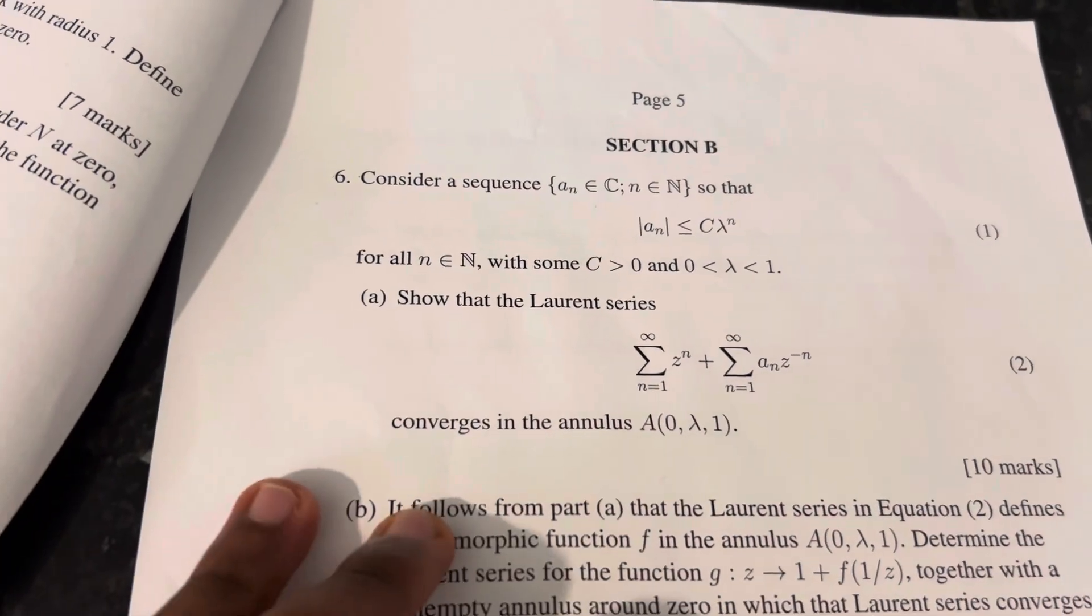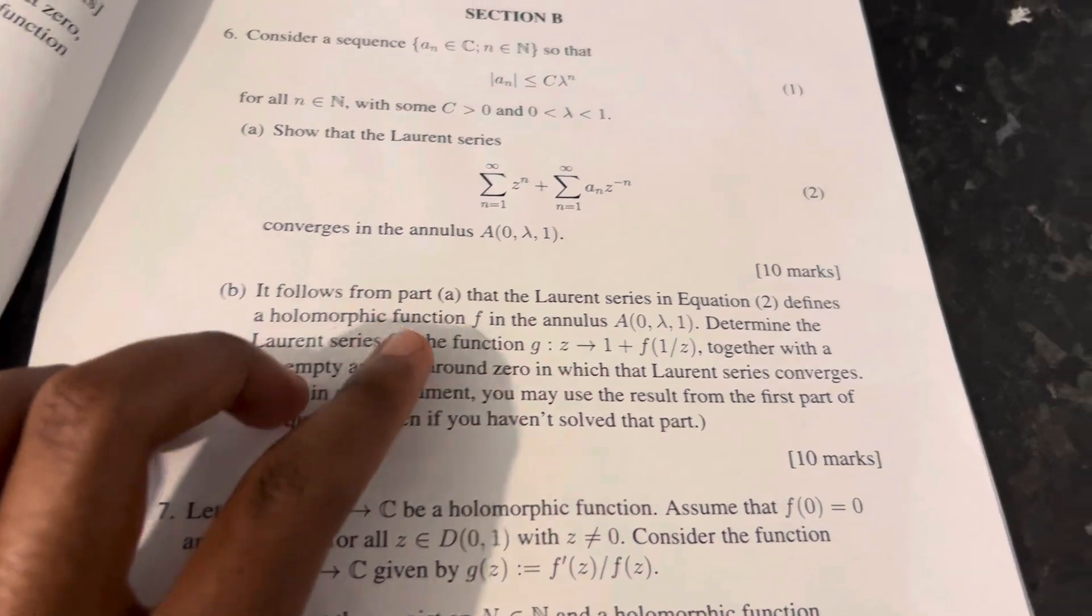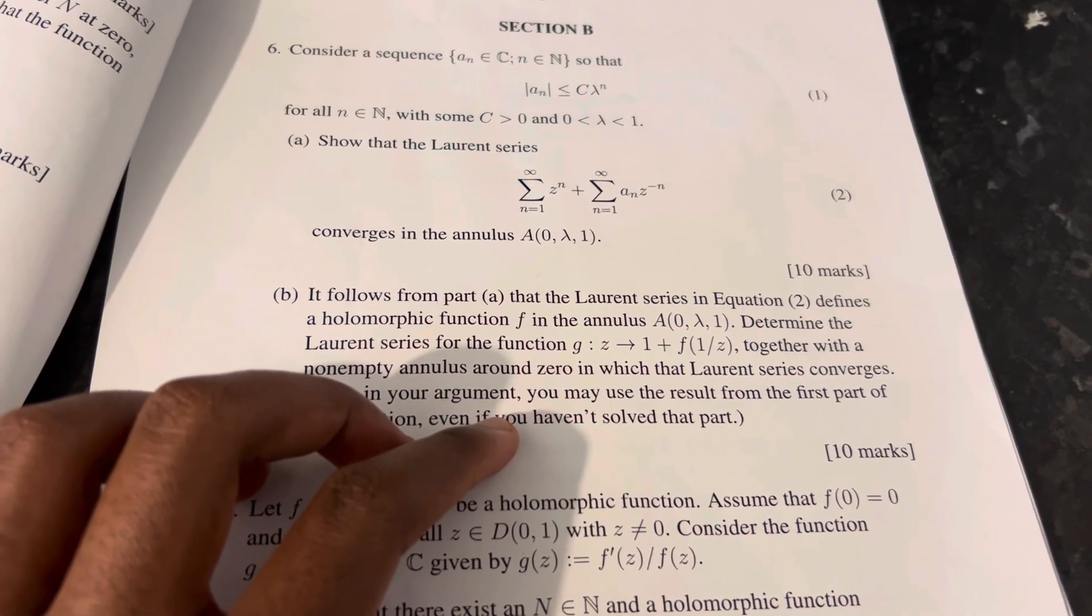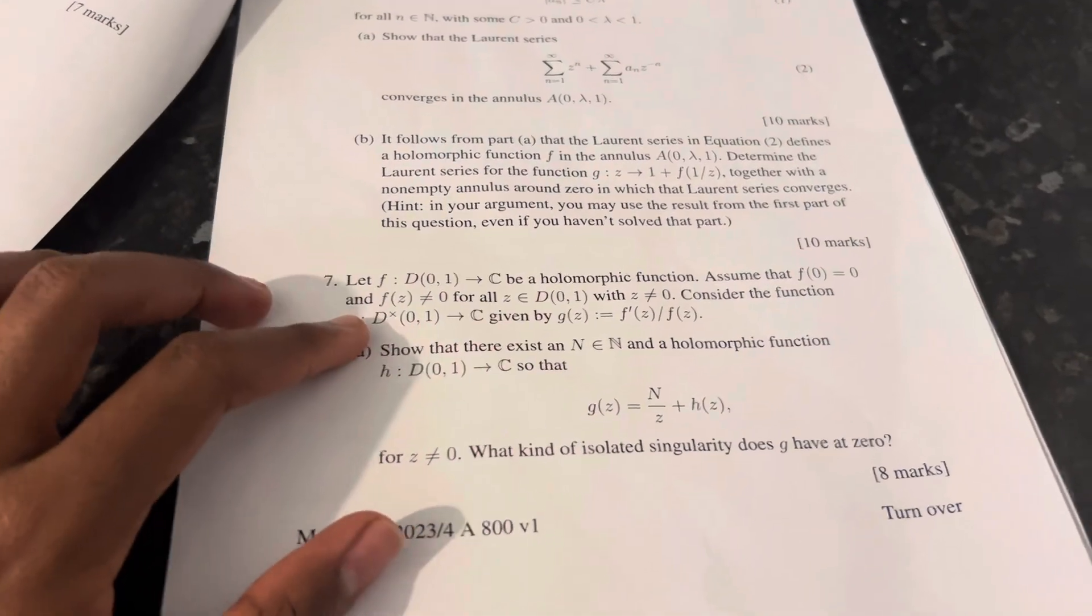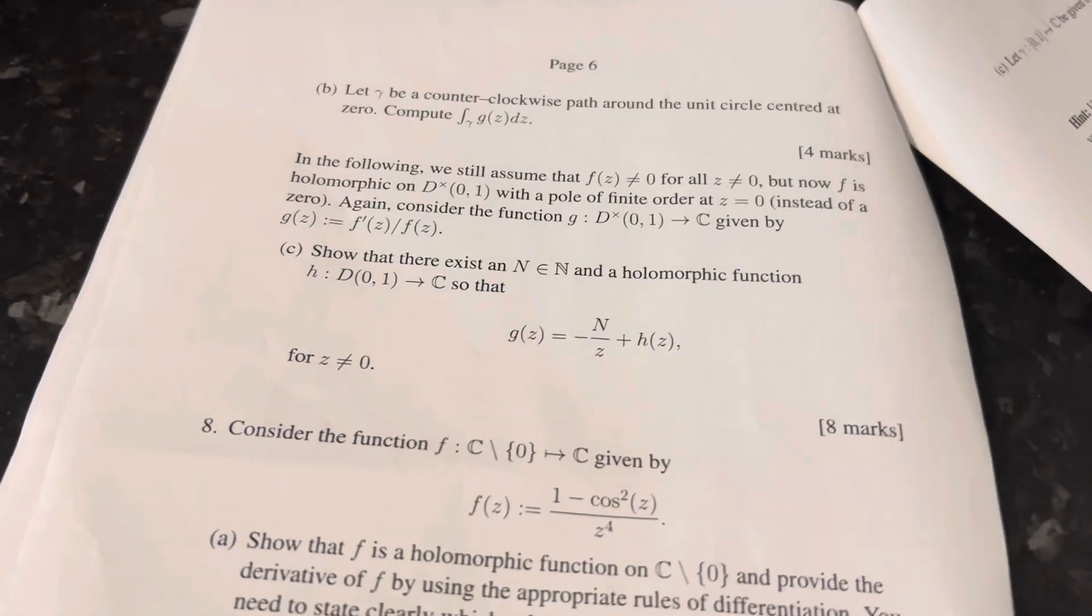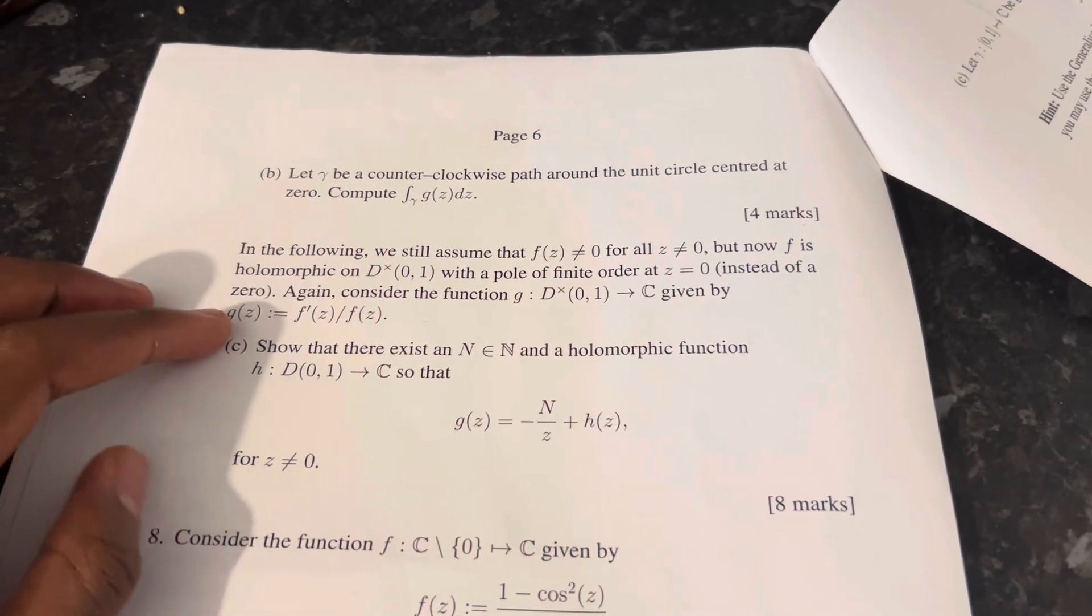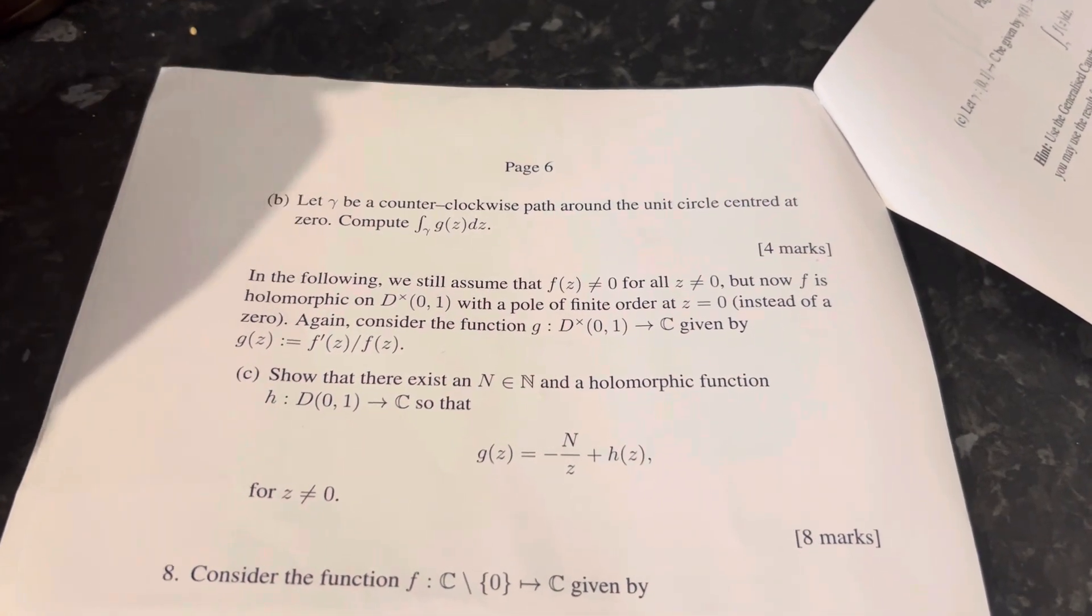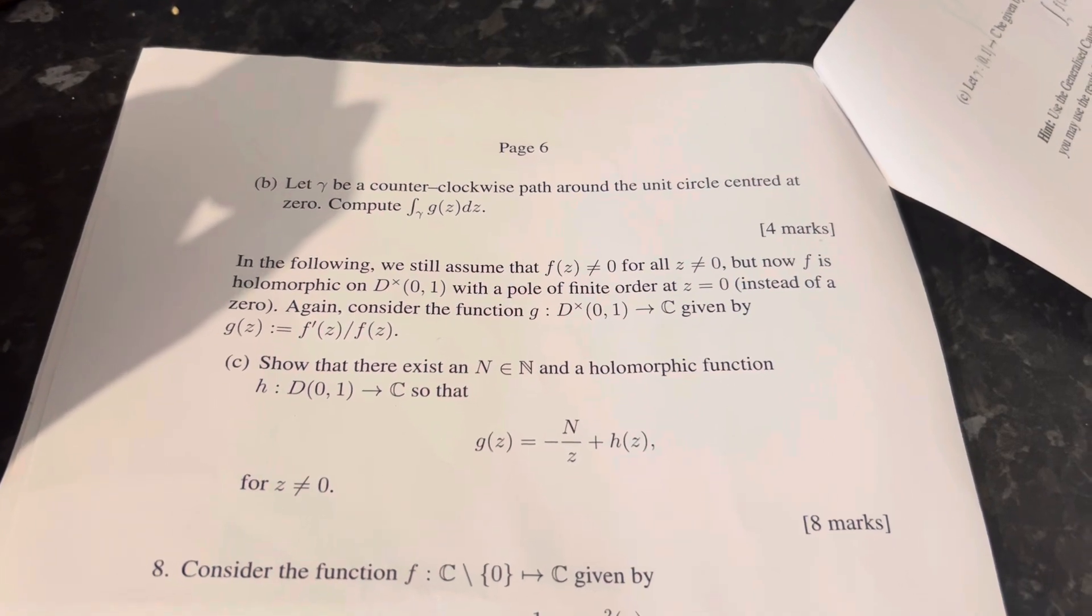Here we have a good question: consider a sequence for all n is a natural number. It converges in the annulus. It follows from part a that the Lorenz series in equation two defines a holomorphic function f in the annulus. Determine the Lorenz series for the function g of z maps to one plus f one over z seven. Let f be a holomorphic function, assume that f is zero.